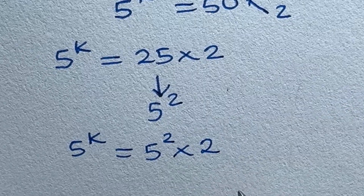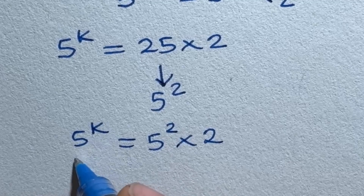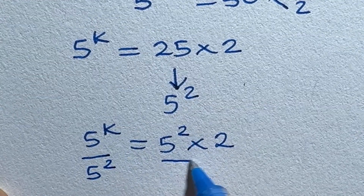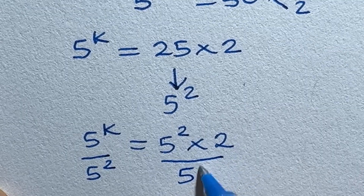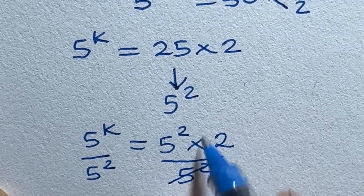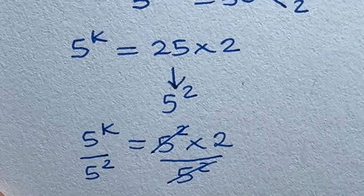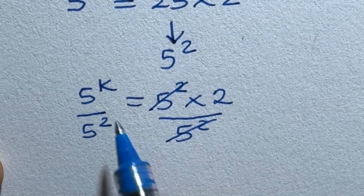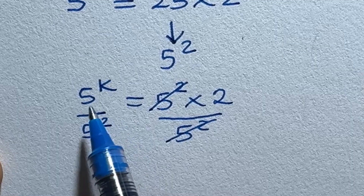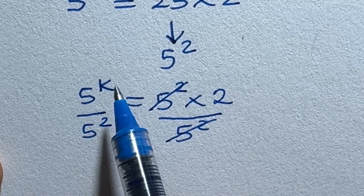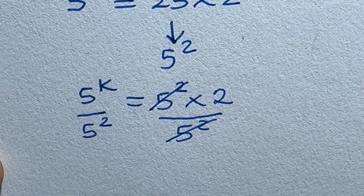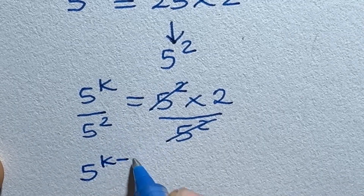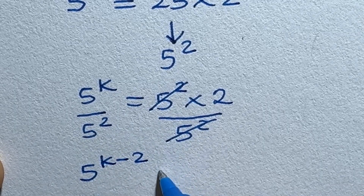Let us divide both sides by 5 raised to the power of 2, so that this removes the 5² from the right hand side. Applying the basic law of indices to the left hand side — since the bases are the same, we can subtract the powers — we now have 5 raised to the power of k minus 2 is equal to 2.